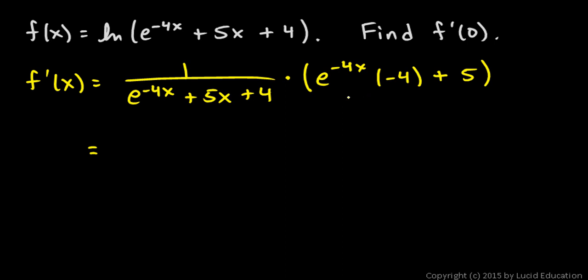Let's just clean that up a little bit. This negative 4 is multiplied by the e to the negative 4x, and all of that is in the numerator, so that's negative 4 e to the negative 4x plus 5 over this denominator e to the negative 4x plus 5x plus 4.